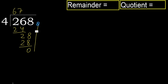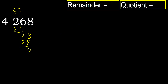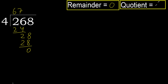Next — that is not a number, therefore finish it. 268 divided by 4 is 67. Ok.